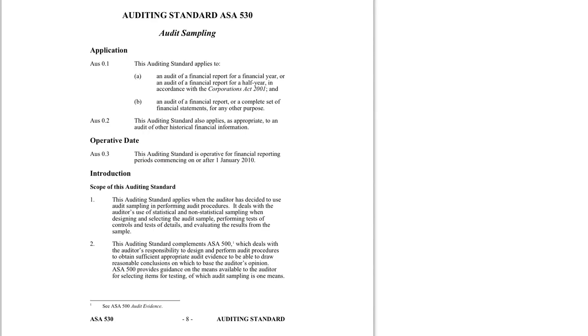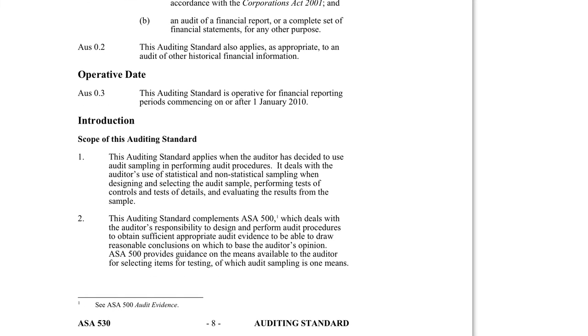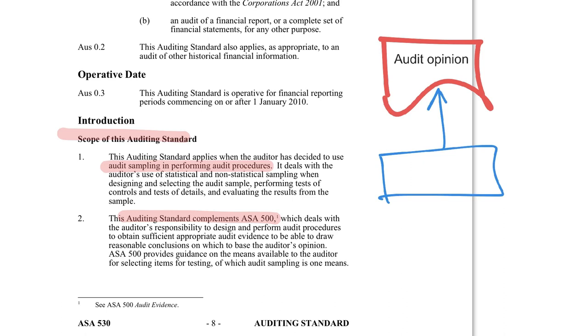So what exactly is the scope of the standards? If we zoom in here and we look at our little section there that says the scope, well this standard applies when we decide to use sampling in performing audit procedures. We use sampling in lots of different ways and again because this is part of the 500 series it's all part of our process to gather evidence.